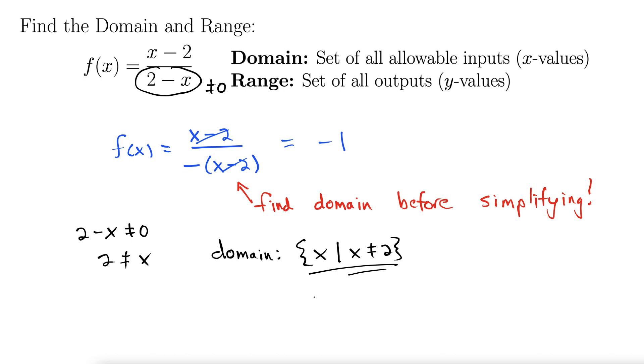Sometimes you might want to write it as something a little more complicated. It's the same approach, but you could write this as negative infinity to 2, union 2 to infinity. But we'll stick with x such that x does not equal 2.